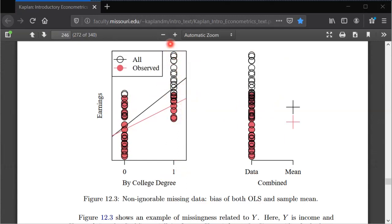And if you recall from earlier chapters, when x is binary, the slope is equal to the difference in means or difference in conditional means.